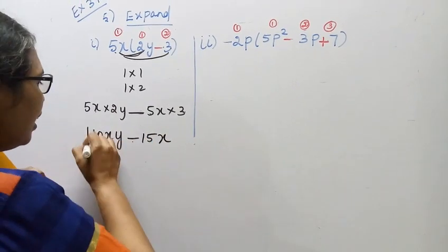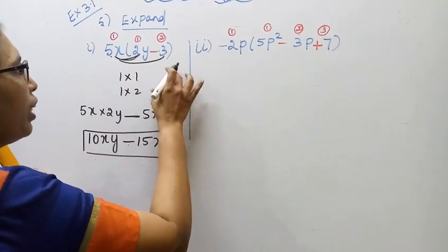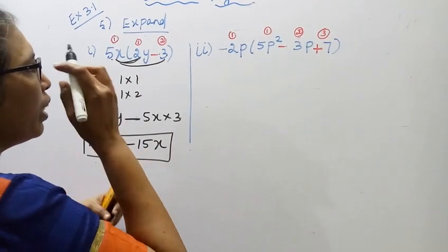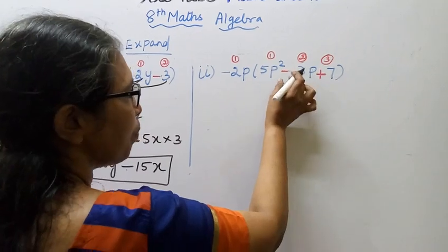15x. This is the sum in the answer. 1 into 1, 1 into 2. Now 1 into 2, 1 into 2.